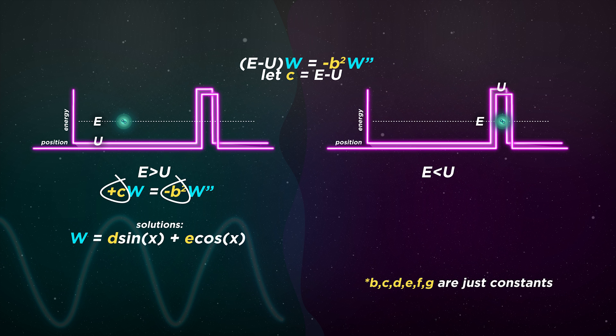In this region, u is not at all zero, in fact, it's greater than e. e minus u is negative, we end up with a positive constant, and the solution turns out to be made of exponential functions.